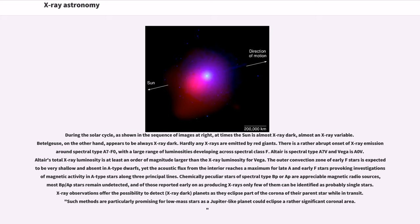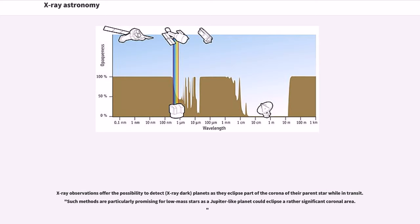X-ray observations offer the possibility to detect planets as they eclipse part of the corona of their parent star while in transit.